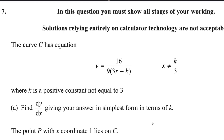Hello guys. Now I will answer question number 7 from PureMath 3 Pearson and Excel A-level exam. The exam was taken in January 2024. In this question, you must show all stages of your working. Solutions relying entirely on calculator technology are not acceptable. The curve C has equation y equals 16 over 9 into 3x minus k, where x is not equal to k over 3, and k is a positive constant not equal to 3.